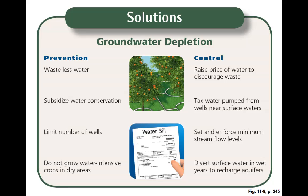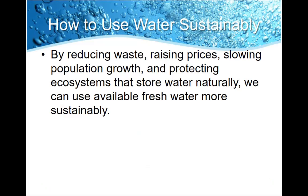We should divert surface water in wet years to recharge our aquifers so that we don't constantly deplete the groundwater supply. If there's more water, that doesn't mean use more water — use the same amount and put that extra water into the aquifer to keep us going for years in the future. By reducing waste, raising prices, slowing population growth, and protecting ecosystems that store water naturally, we can use available fresh water much more sustainably for many years to come.